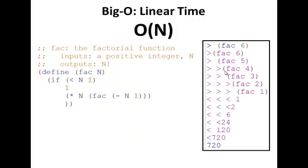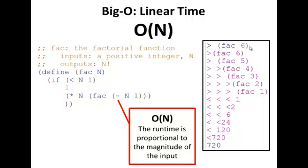A linear time function is one where it does depend upon the magnitude of the input. Here I have the fact function, which we wrote before. You can see the trace of the fact function on the right. The magnitude of the argument to fact, here it's six, determines the number of function calls that get made. O of n is where the runtime is proportional to the magnitude of the input. This is just to get you familiar with some of the classes of problems we're seeing with Big O.